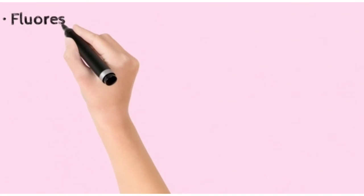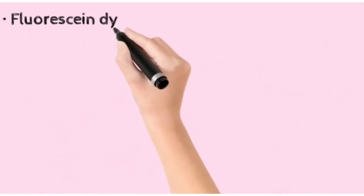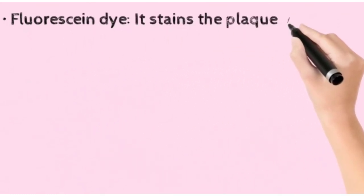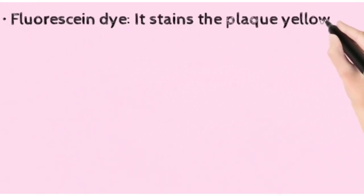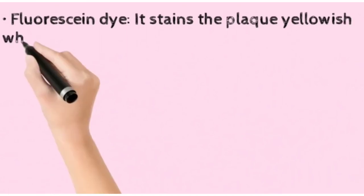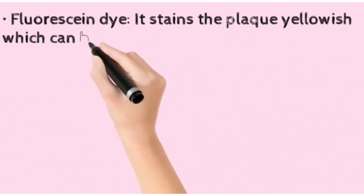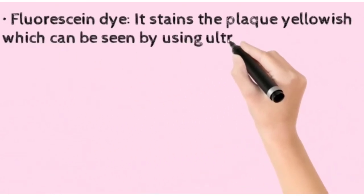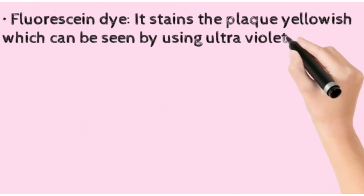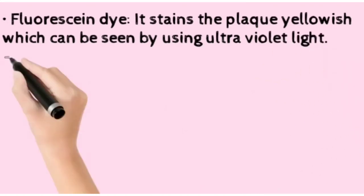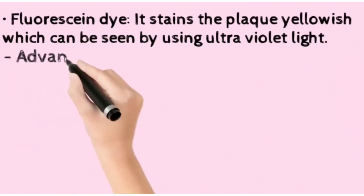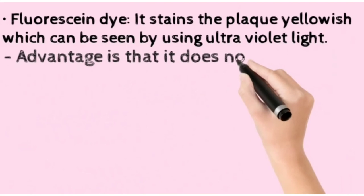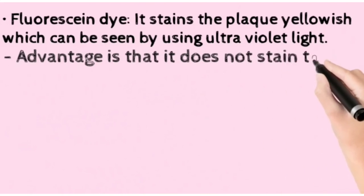Then we talk about fluorescent dye. It is going to stain the plaque yellow, which can be seen through UV rays. The advantage is that it does not stain any soft tissues.